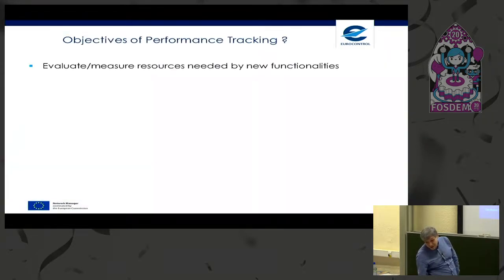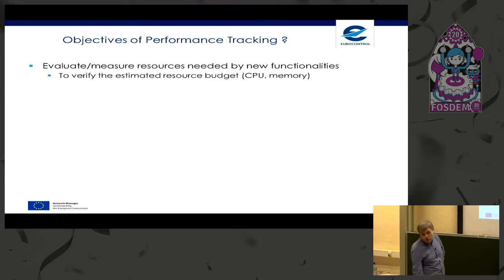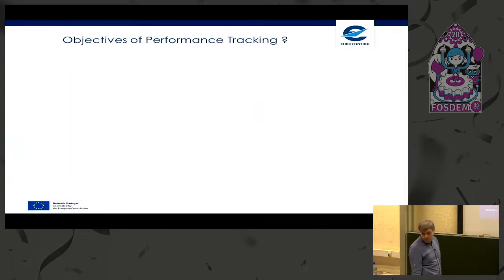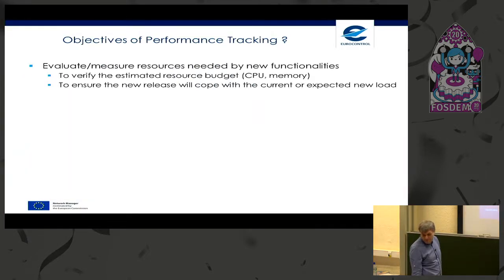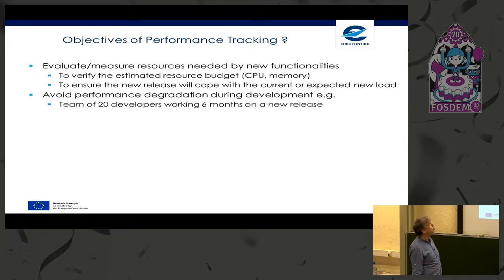So let's switch to the next slide. What are the objectives of performance tracking? The objective is to evaluate and measure resources needed by new functionalities, and to verify the estimated resource budget — CPU, memory — of what you develop. We also want to ensure that the new release will cope with the current or expected new load, and to avoid performance degradation during development.